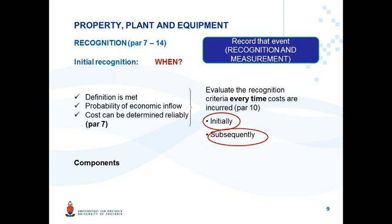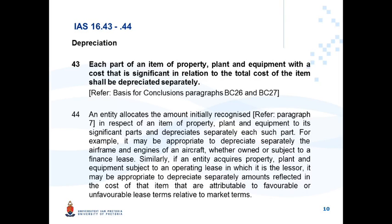Under this concept, the first thing to focus on is components. Why are components so important when considering initial recognition? Paragraph 43 states: each part of an item of property, plant and equipment with a cost that is significant in relation to the total cost of the item shall be depreciated separately. An entity allocates the amount initially recognized in respect of an item to each significant part and depreciates each such part separately.